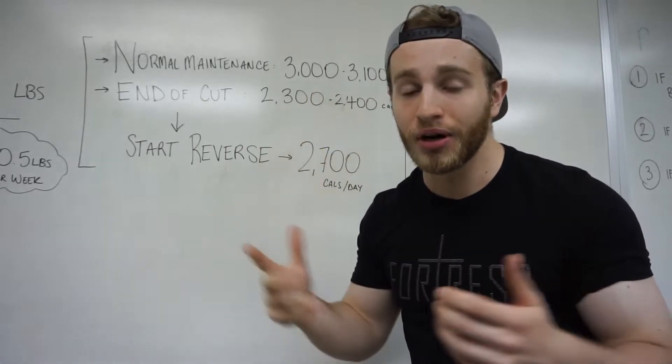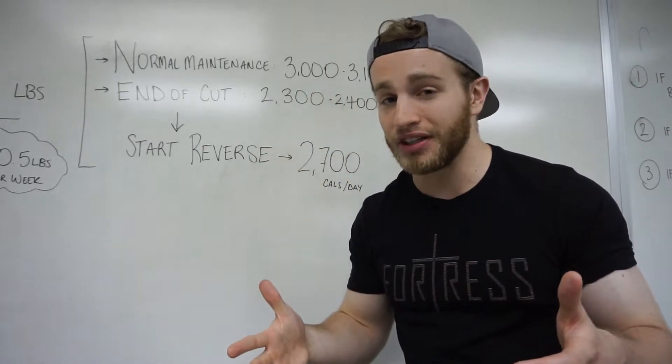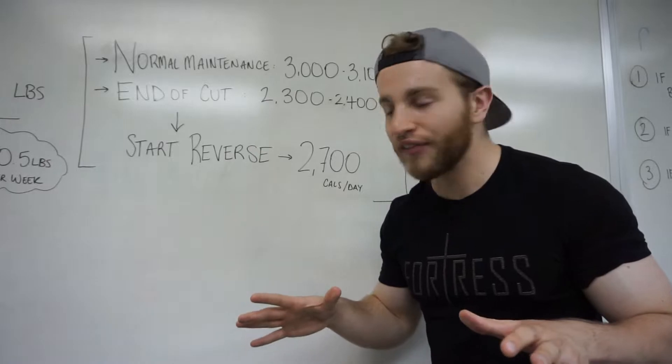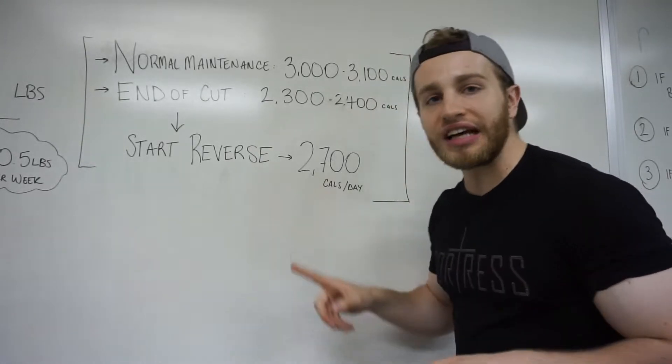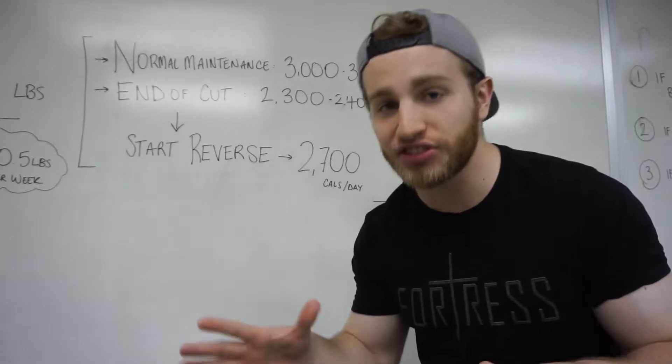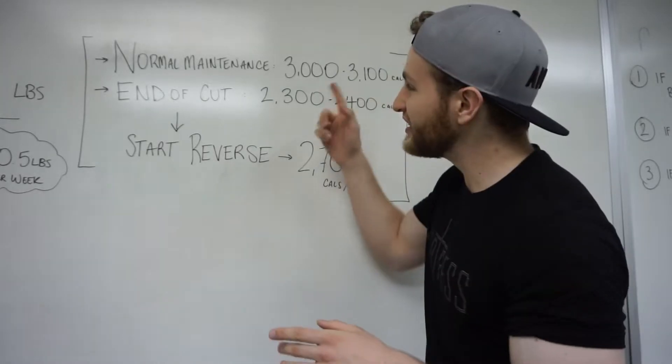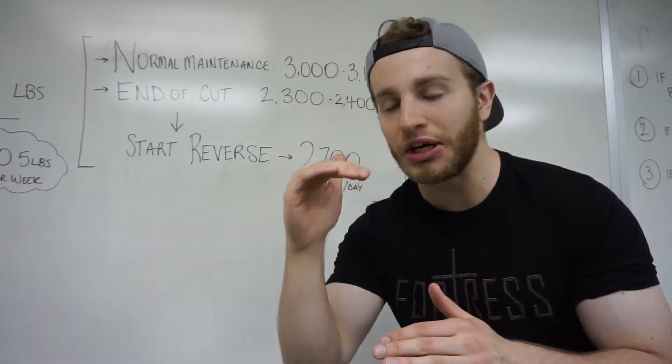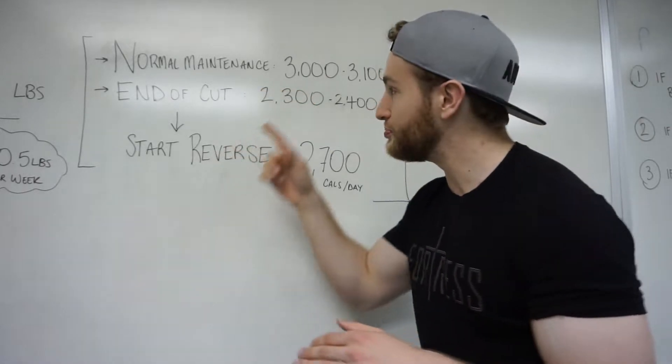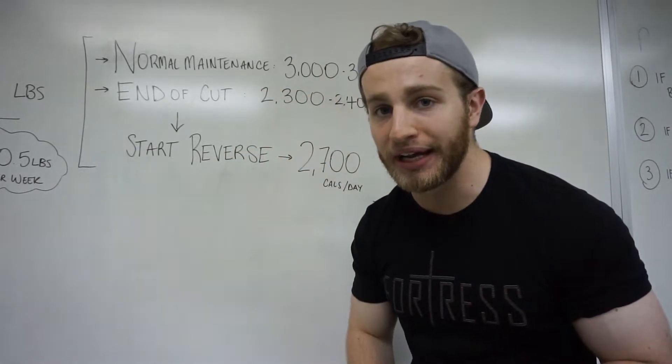So I can't just shoot right back up to that number because that won't be my maintenance calories anymore. Where I'm starting this reverse diet from is around 2,700 calories a day, which is where I started the Shred 40. It's kind of a safe in between and that will give me a good base to start slowly increasing my calories back up to that normal maintenance.